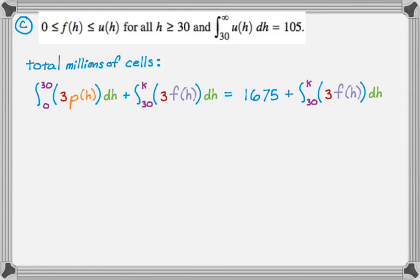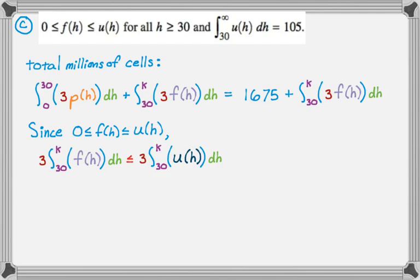So what we also want to do is show that the total number must be less than 2,000 million. This is where this weird inequality comes in. Since we're told that zero is less than or equal to F of H is less than or equal to U of H, we can establish a lot of inequalities. So three times the integral from 30 to K of F of H dH should be less than or equal to, based on this inequality we're given, three times the integral from 30 to K of U of H dH.